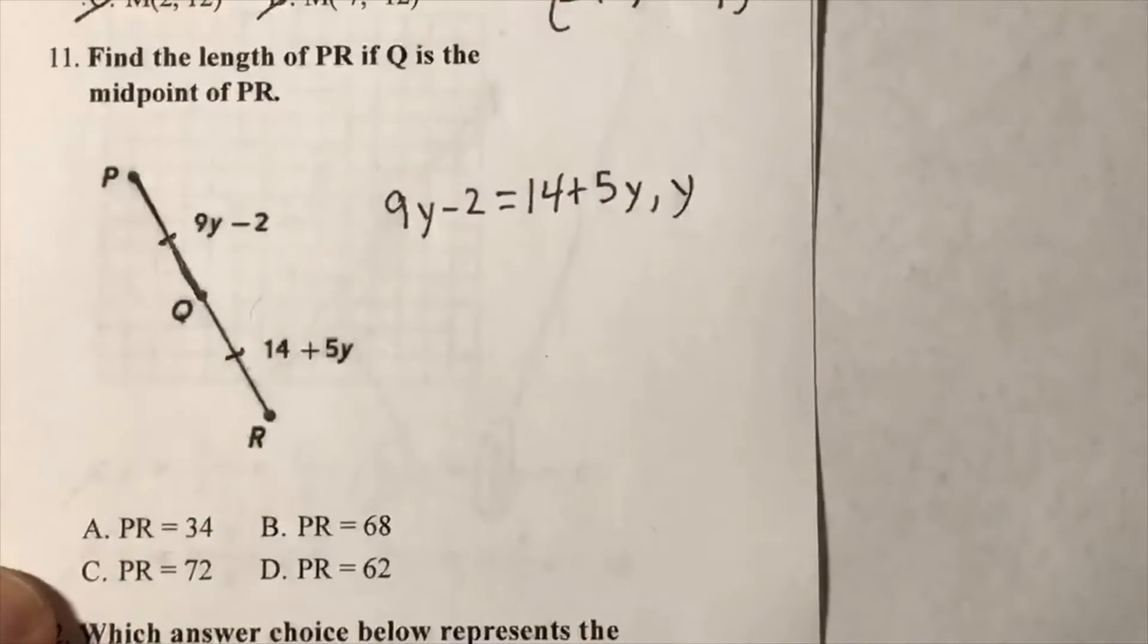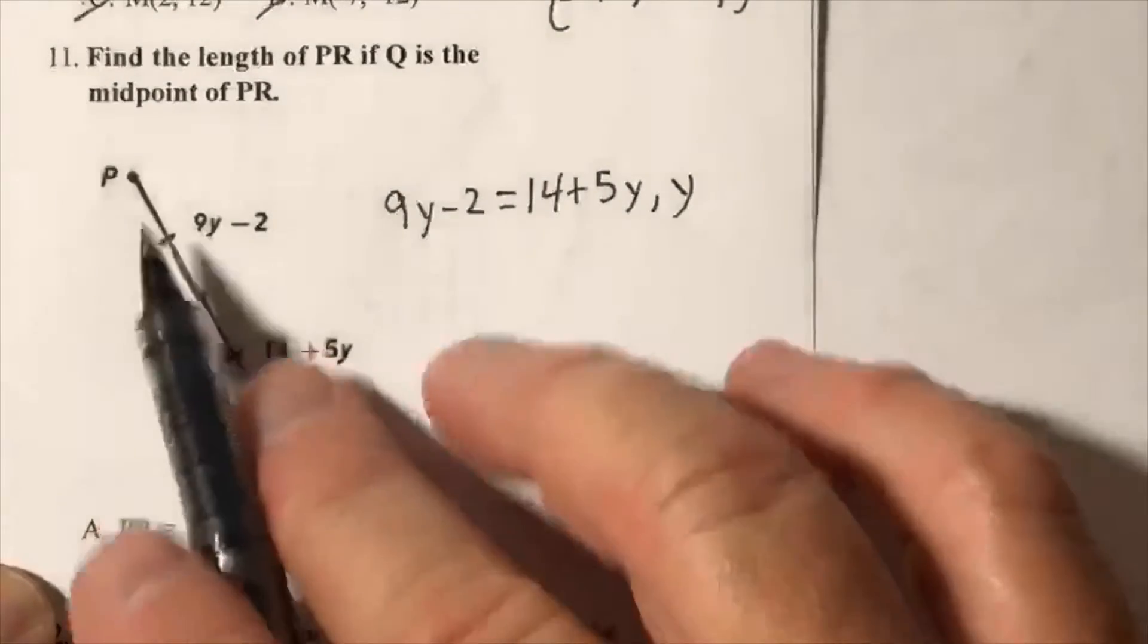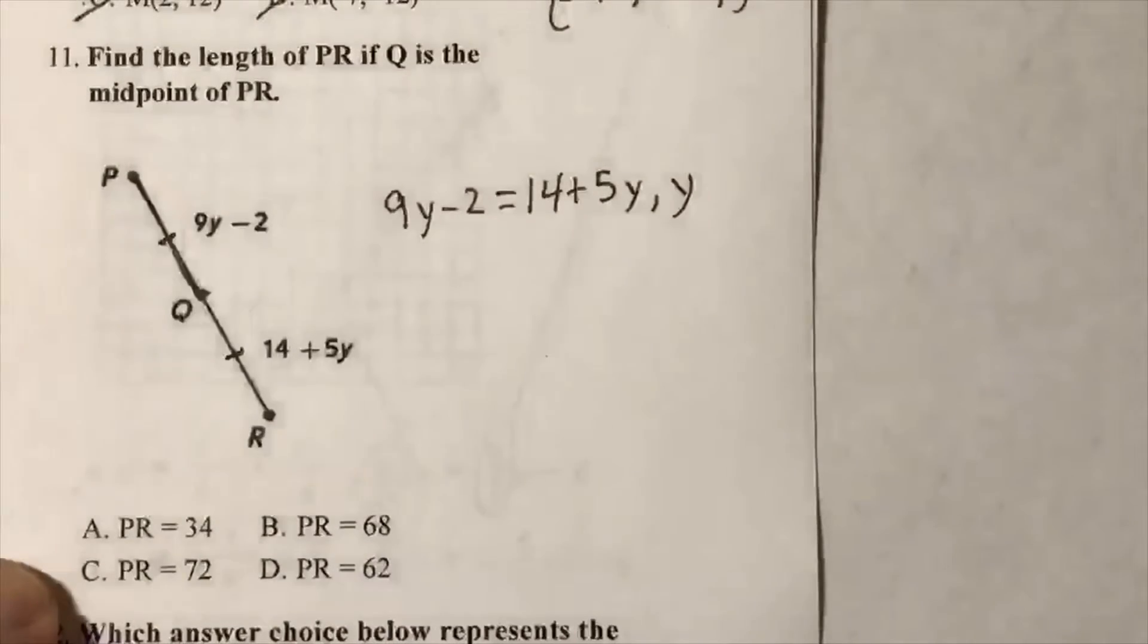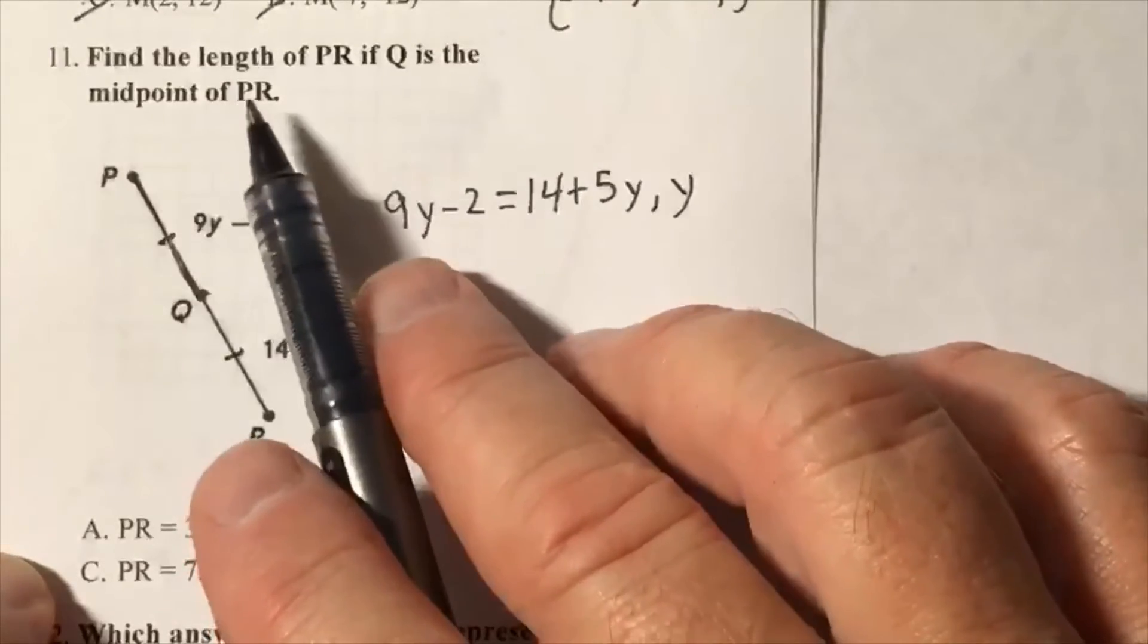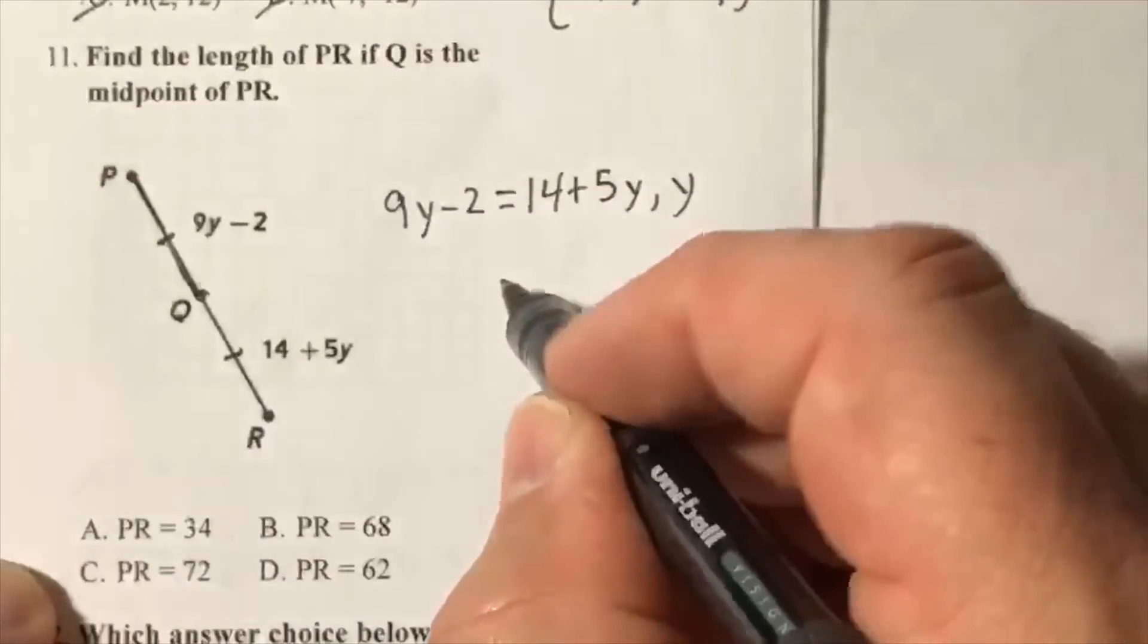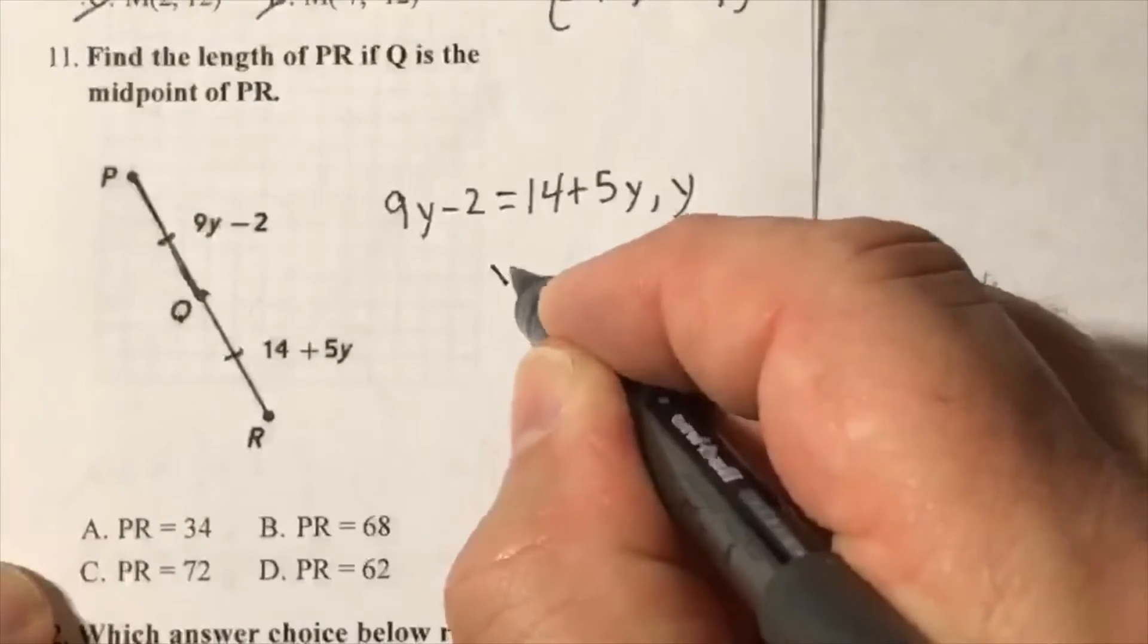All right guys, let's get this. Q is a midpoint, creates equal parts, and it's asking us to find PR, which means I've got to find y.